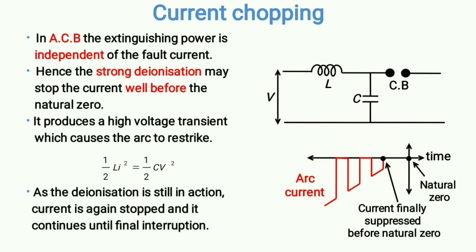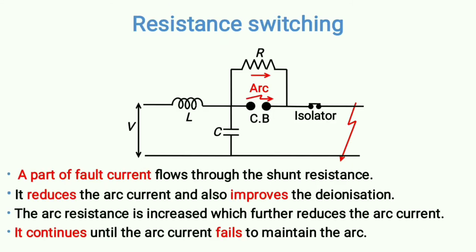Current chopping is not at all desirable because the current is continuously falling abruptly to zero and coming back, generating a huge amount of energy across the circuit breaker contacts. This will definitely damage the circuit breaker contacts and the surrounding equipment. It is therefore always desirable to prevent this disadvantage.